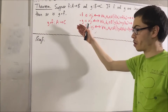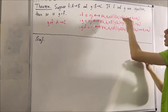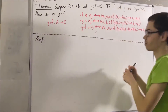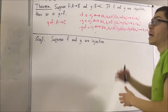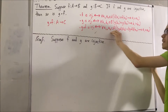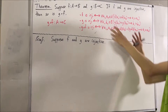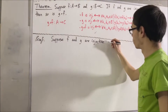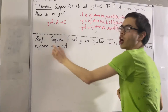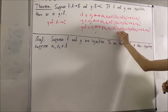Now let's prove the theorem. Suppose we've already declared our functions f from A to B and g from B to C, and both are injective. Our goal is to prove that g compose f is also injective. So give me any two arbitrary elements in A — I'll call them a1 and a2 — and suppose that g compose f of a1 equals g compose f of a2.